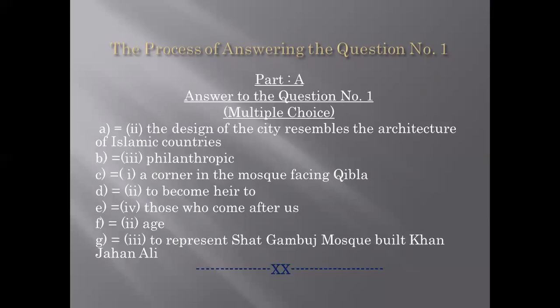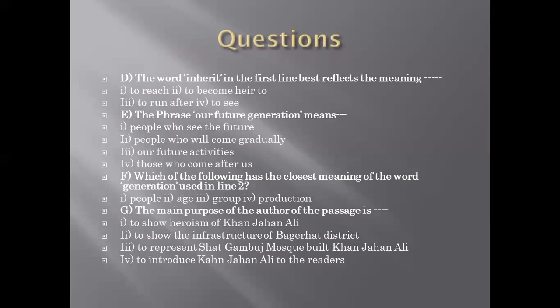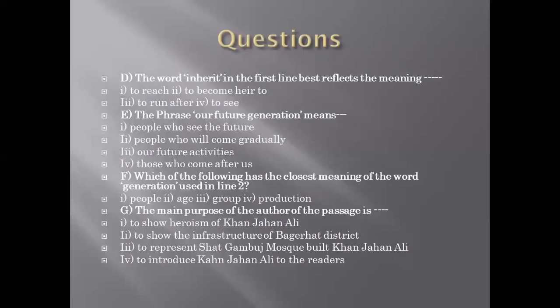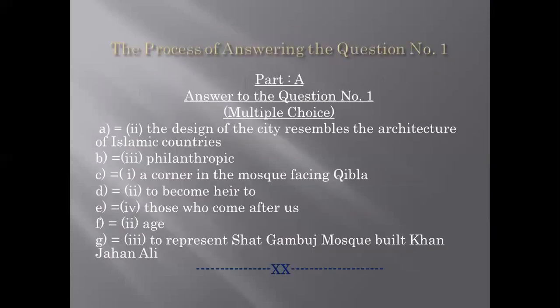For question f: which of the following has the closest meaning of the word 'generation' used in line two — people, era, group, or production? The best answer is the second option: 'era.' For question g: the main purpose of the author of the passage is — to show heroism of Khan Jahan Ali / to show the infrastructure of Bagerhat district / to represent Shat Gumbaz Mosque built by Khan Jahan Ali / to introduce Khan Jahan Ali to readers. The best option is the third one: to represent Shat Gumbaz Mosque built by Khan Jahan Ali.